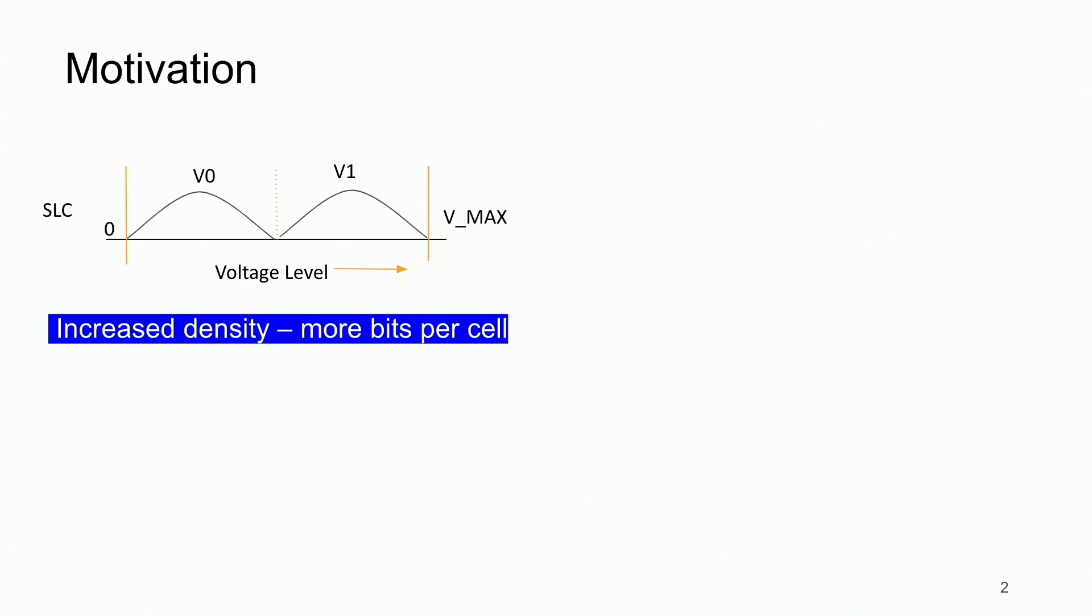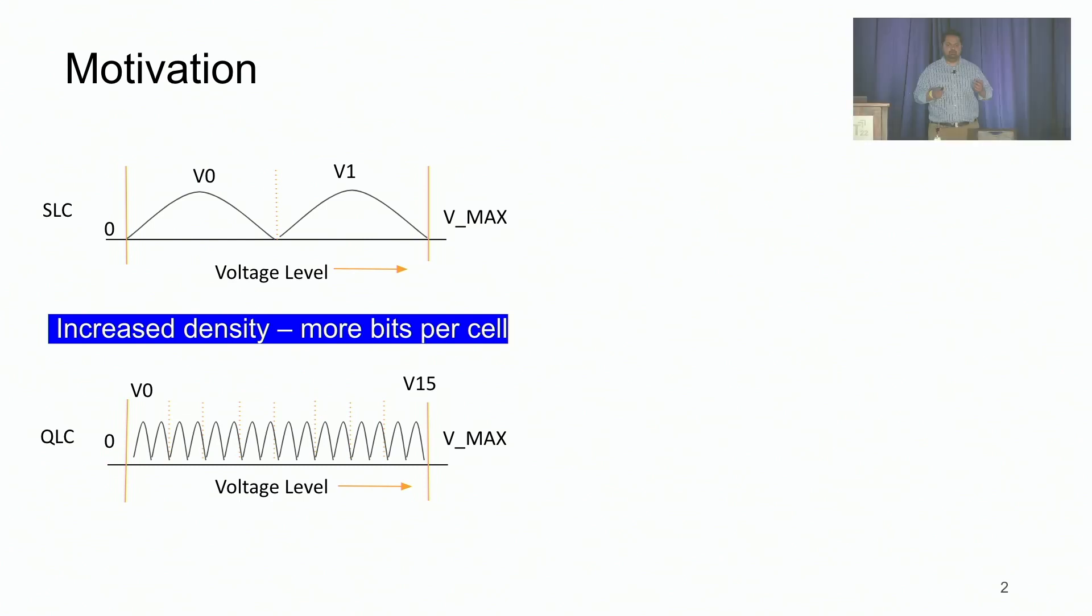As the demand for high-density SSDs increased, device manufacturers started placing a lot more bits into the same cell. And so today in quad-level cell drives or QLC drives, we have four bits stored in a single cell represented by one of the 16 different voltage levels, from V0 to V15.